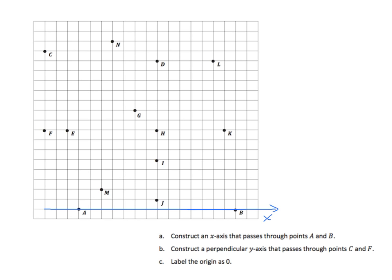Now it says, construct a perpendicular y-axis that passes through C and F. Going through C and F, and we'll label that y. The last task in this series of three says, label the origin as 0, so we'll do that right there. We have 0 at the intersection of the x and y-axis as the origin.